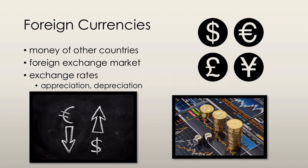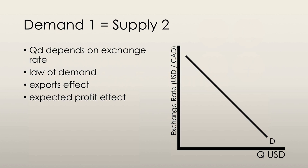The foreign exchange market is a competitive market because it has many, many traders, and there are no restrictions on who can trade. When people demand, for example, Canadian dollars, they supply their own country's money as they buy these Canadian dollars. The factors that influence the demand for Canadian dollars thus also influence the supply of other currencies. That's why we say that the demand for one currency is a good derivative of the supply of another currency.